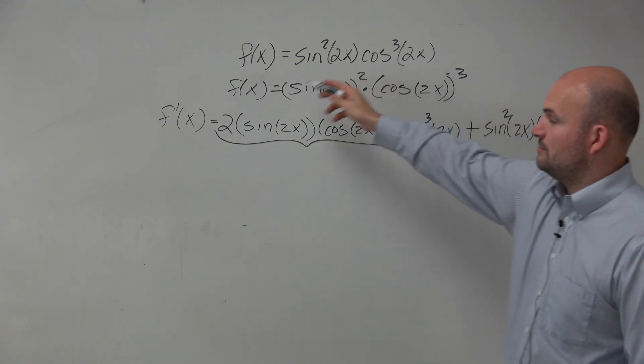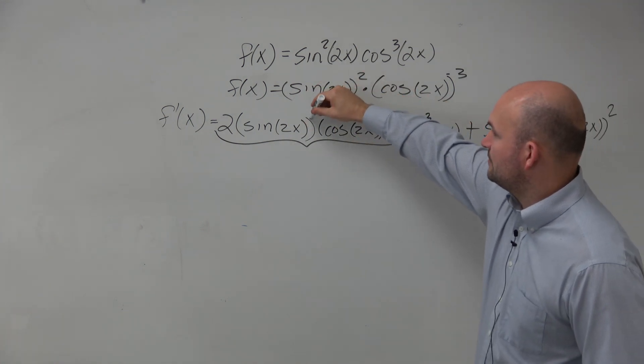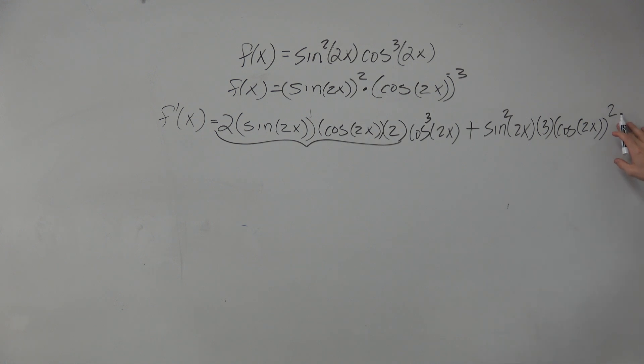Right? Because this one, we had 1. It was really a 1 up there. Here, we're going to have squared. And then times the derivative of this, which is going to be a negative sine of 2x times the derivative of inside of that, which is 2.